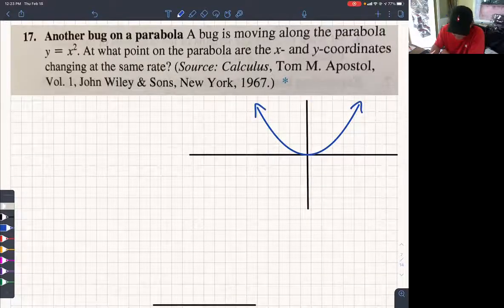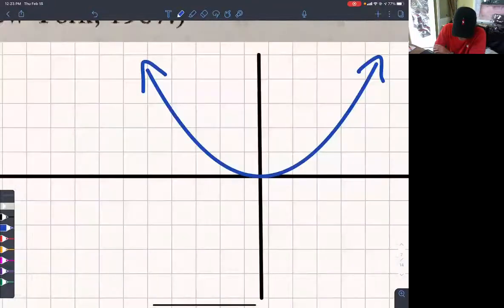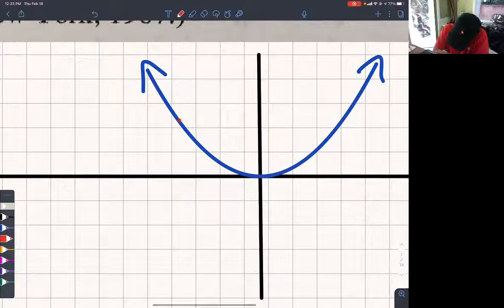There we go. And so there's a bug on this parabola. Should we make it a ladybug? Let's make it a ladybug. I like ladybugs. So we're going to draw a ladybug.